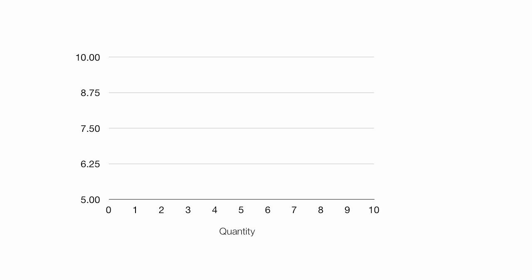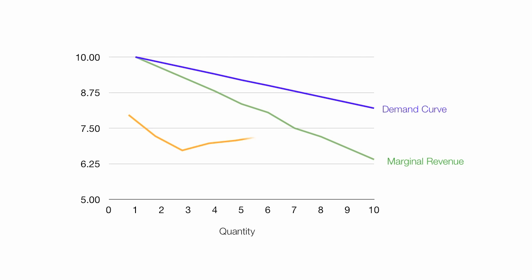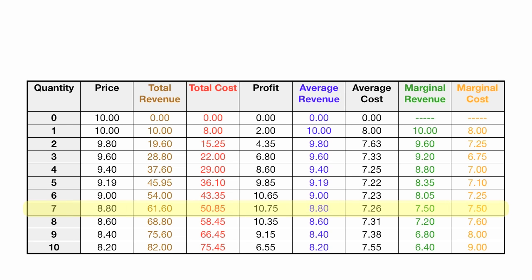Now I'm going to graph marginal cost, marginal revenue, and average revenue. Average revenue is the demand curve, marginal revenue looks like that, and finally marginal cost. As planned, marginal cost and marginal revenue intersect at quantity 7. Going straight up from there gives a price of $8.80, which is in the table as well. These are my equilibrium values: marginal cost $7.50, marginal revenue $7.50. Profit is $10.75 at 7 units — $10.65 at 6 units and $10.35 at 8 units — so profit is maximized at 7 units.